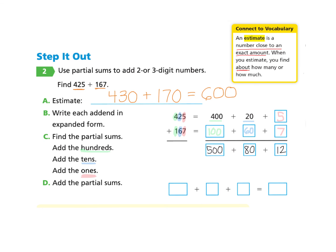Part D asks us to add the partial sums. So we will add these three numbers. So we have 500, we have 80, and we have 12. If you'd like to pause and compute this equation, you can do that. And when you come back, you will find that the answer is 592.